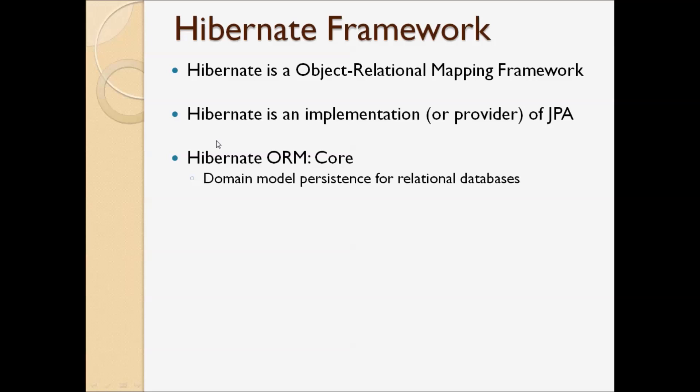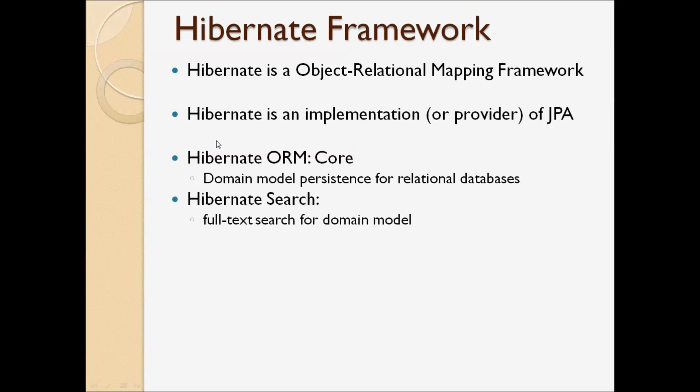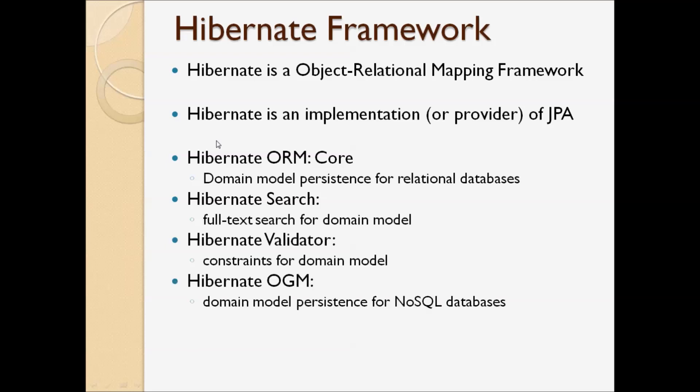Hibernate framework consists of several components. The first one is Hibernate ORM, or Hibernate object-relational mapping, which is the core of the framework on which other components depend. We use Hibernate ORM for mapping Java model classes to tables in relational databases. Hibernate Search is a full-text search component for the domain model. Hibernate Validator is a component for making constraints for the domain model. And Hibernate OGM is a domain model persistence component for NoSQL databases.